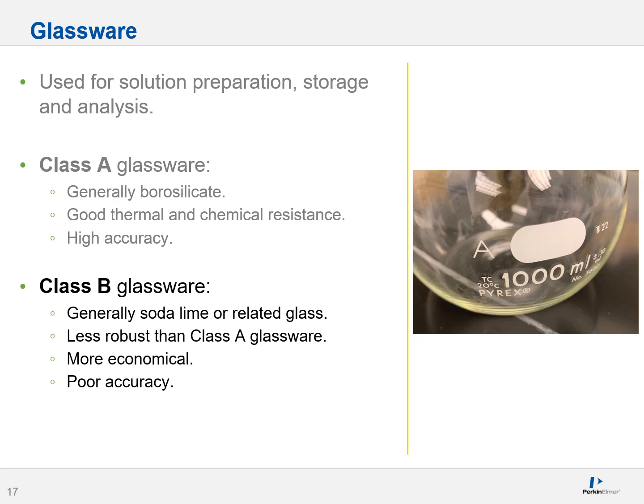Less commonly, you may also encounter class B glassware. This is generally soda lime or a related type of glass, and it's less robust and chemically resistant than class A. They tend to be more economical, but in terms of accuracy they're not the greatest. So if you can, err on the side of class A glassware whenever practical.